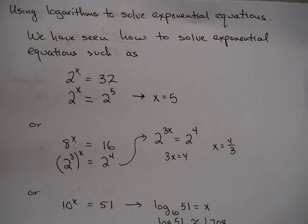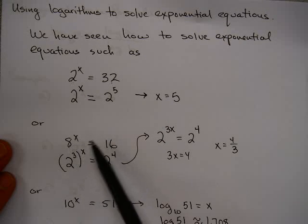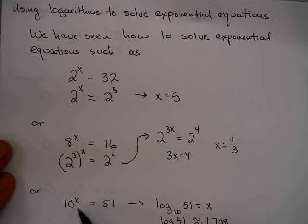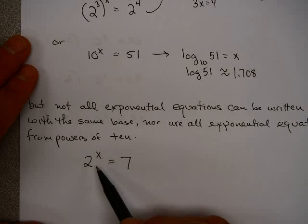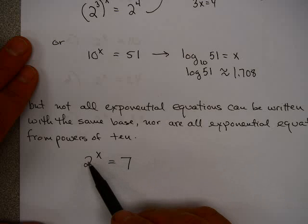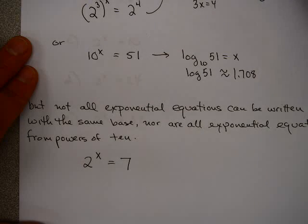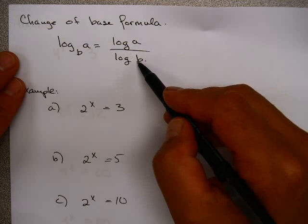Not all exponential equations can be written with the same base — 2^x = 32 and 8^x = 16 are special cases. Nor are all exponential equations powers of 10 that can use the common logarithm. For example, 2^x = 7: you can't write 7 as a power of 2 and it's not base 10, so we need a new tool called the change of base formula. It states that log base b of a equals log(a) divided by log(b), where log denotes the common log.